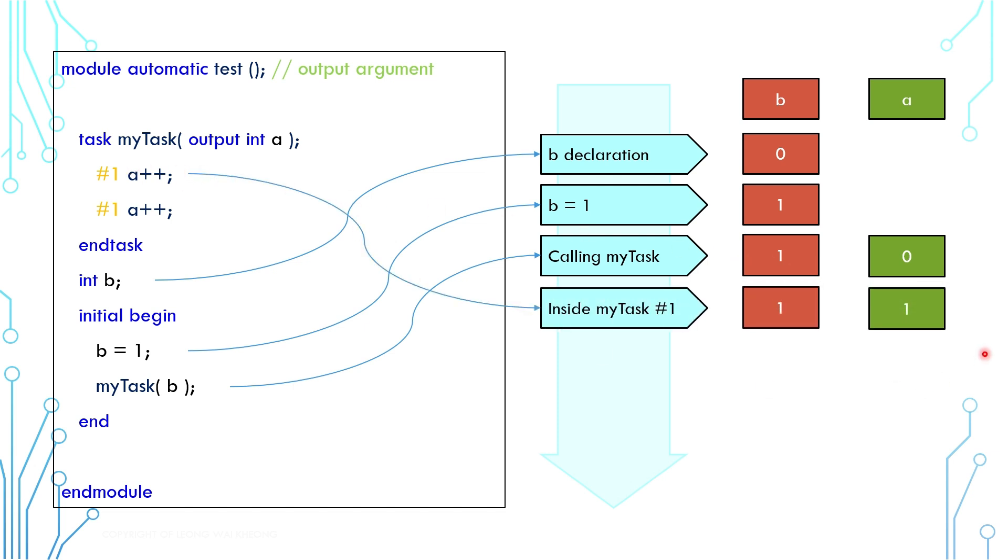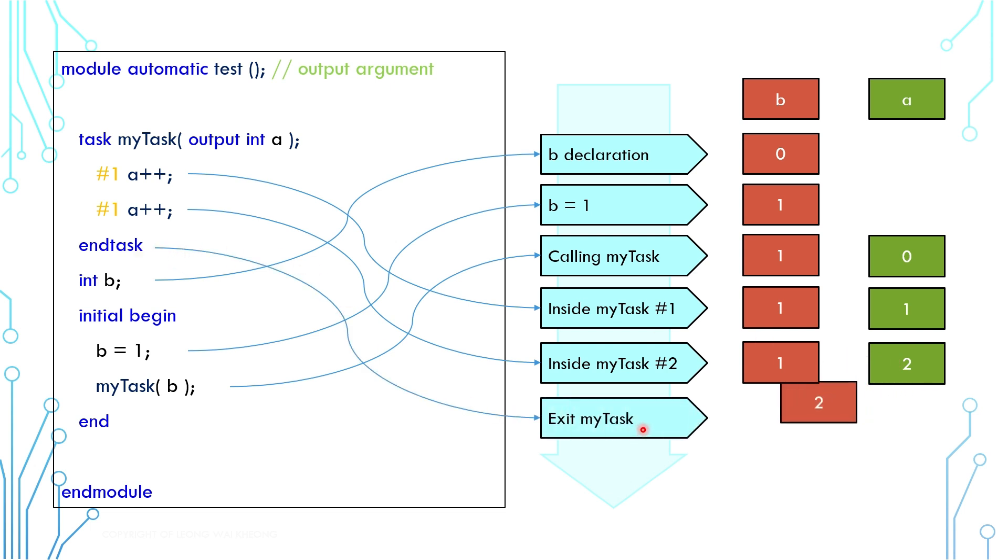At this point, A is incremented to 1 and at this point, A is incremented to 2. Now at this point, the task ends. Since A is an output argument, its value now is passed to the caller variable B. And as a result, B is 2 at the end.